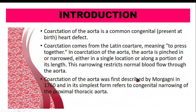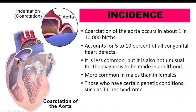This was first described by Morgagni in 1760. Coarctation of aorta occurs in 1 in 10,000 live births, representing five to ten percent of all congenital heart disease. It is less common but not unusual for the diagnosis to be made in adulthood, as the problem may not be identified until then.